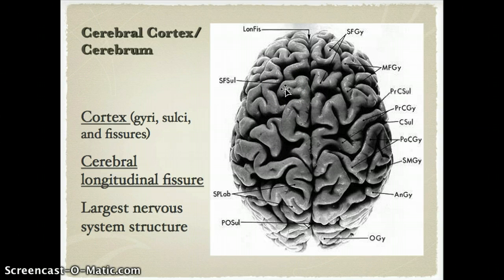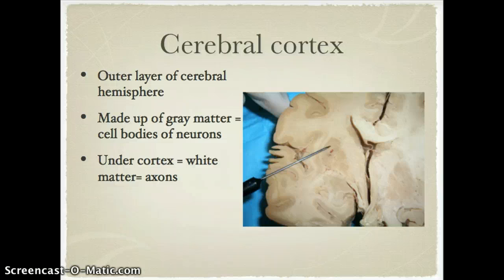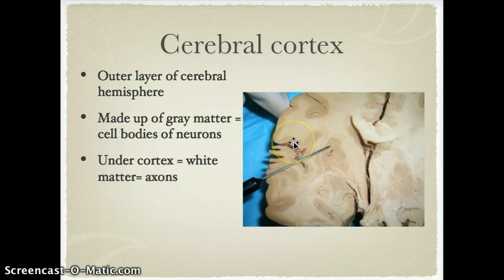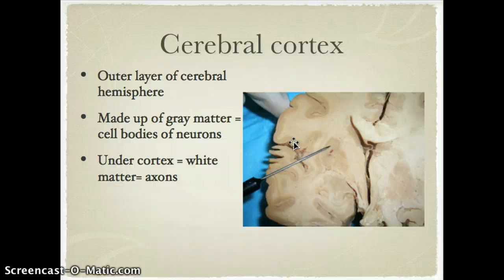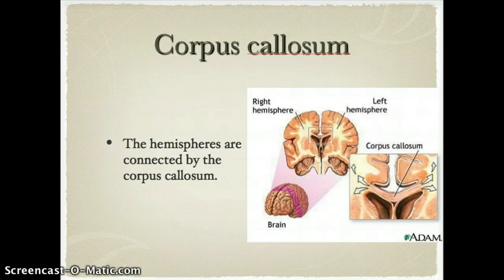Our brain weighs about three pounds and is highly evolved to be a site of information processing. On the cerebral cortex, the outer layer of the cerebral hemisphere is made up of gray matter, which consists of the cell bodies of neurons. Underlying the cortex is white matter, which consists of axons — axons can be thought of as cables carrying information from one neuron to another.